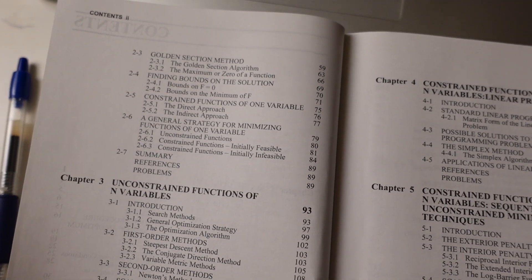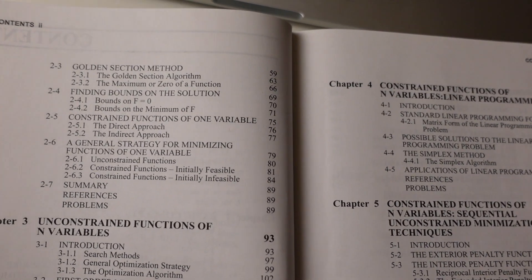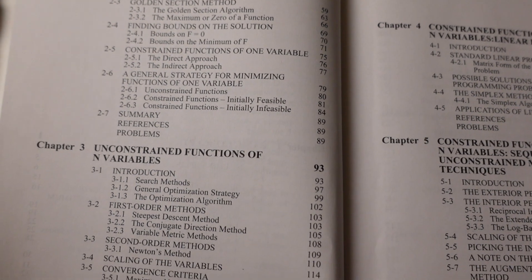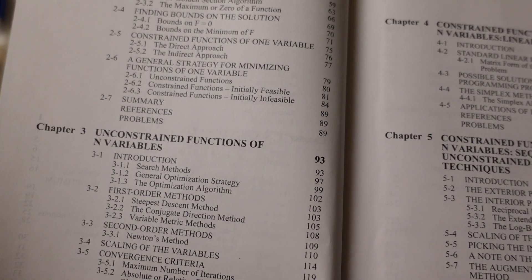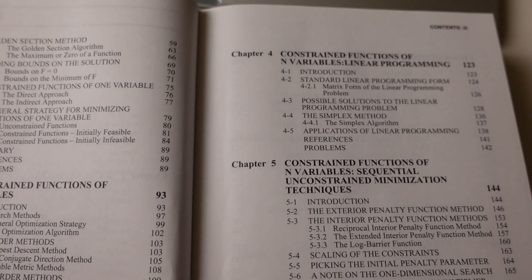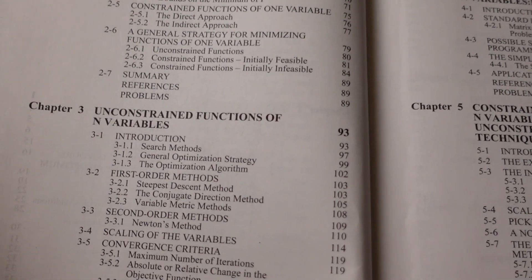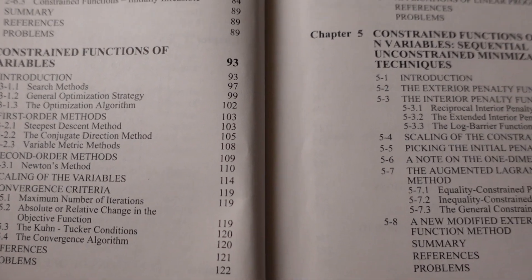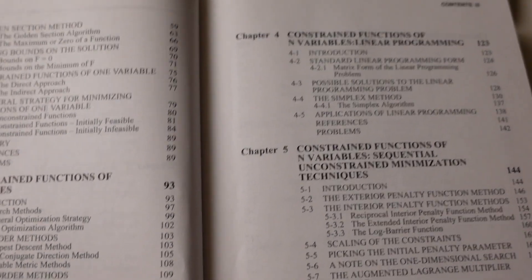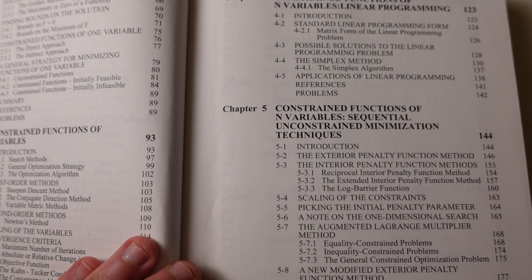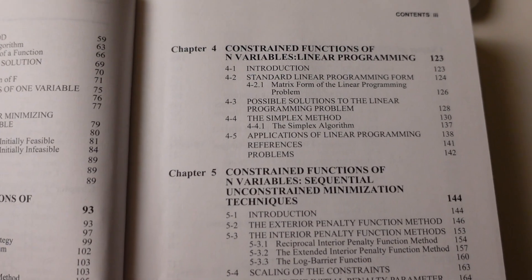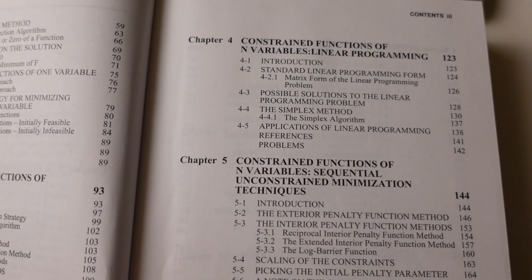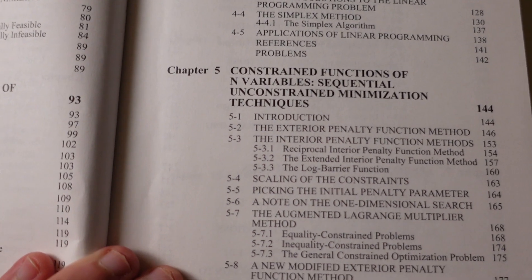Methods like golden section methods that you will see also in numerical analysis. Then he goes on with dealing with unconstrained optimization. And as you can see here, constraint optimization, first order, second order methods like Newton's method. I will make, when I have the time, a video about Newton's method. And here we have the constraint functions of n variables, the linear programming simplex methods, and then other important methods for constraint optimization.